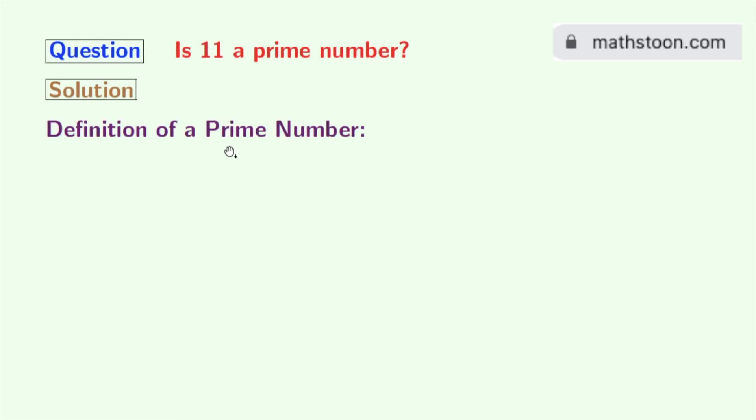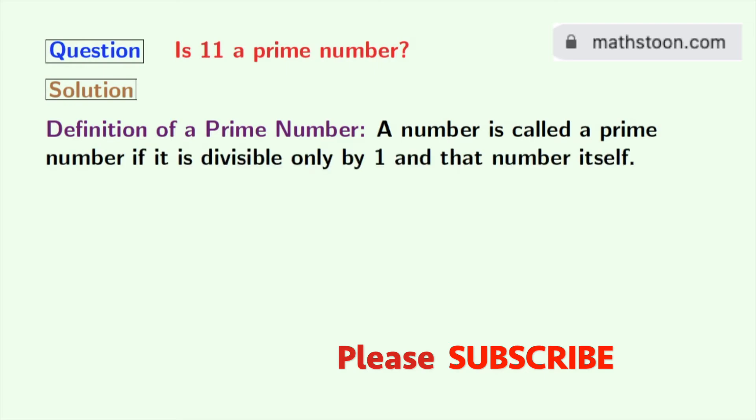Let us first look at the definition of a prime number. A number is called a prime number if it is divisible only by one and that number itself.